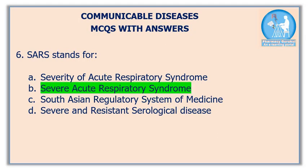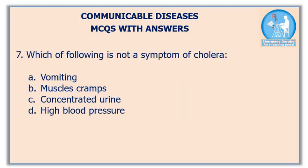Question number six: SARS stands for — the correct answer is option B: Severe Acute Respiratory Syndrome. Seventh question: which of the following is not a symptom of cholera? The correct answer is option D: high blood pressure.